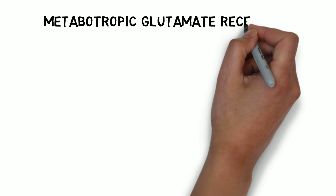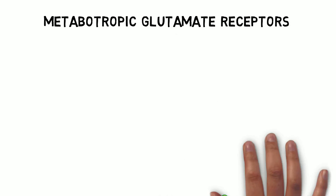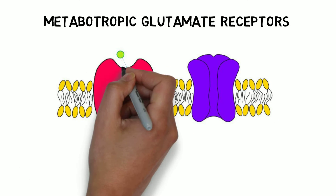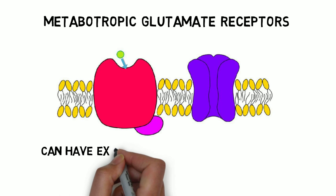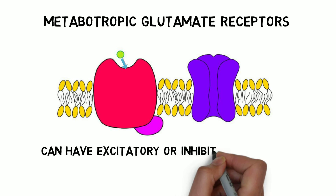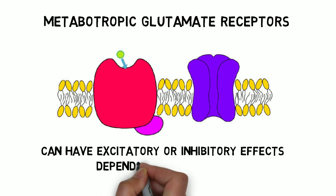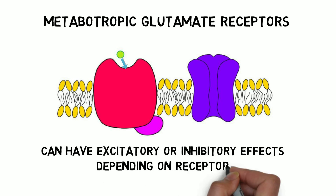There are also three identified types of metabotropic glutamate receptors. These receptors have more varied effects than ionotropic glutamate receptors, and may be involved with excitatory or inhibitory actions.